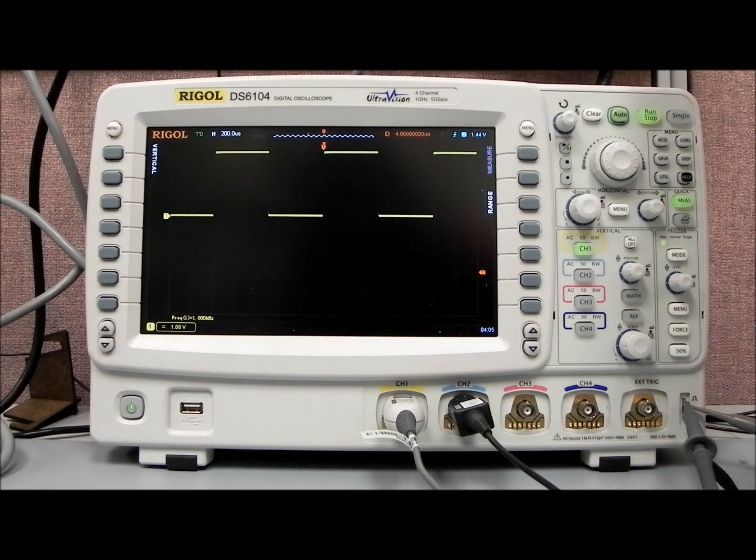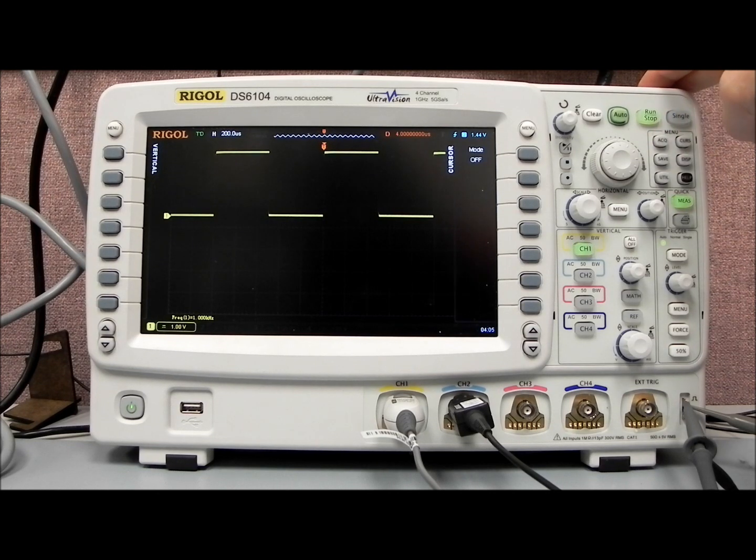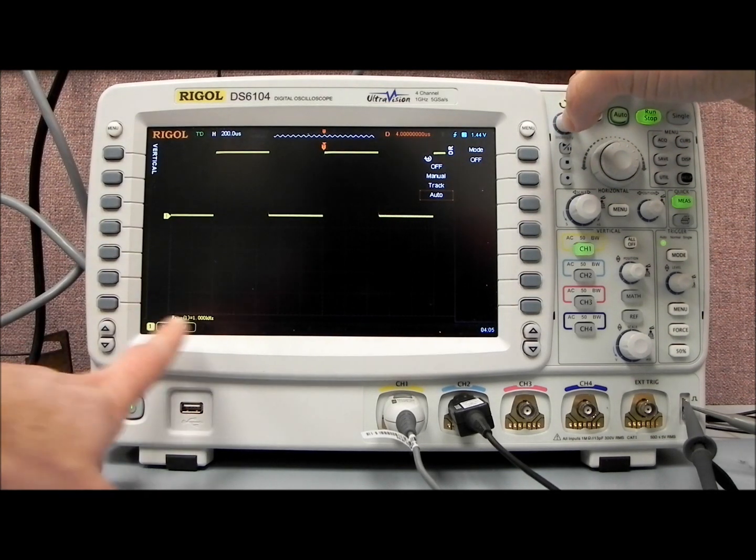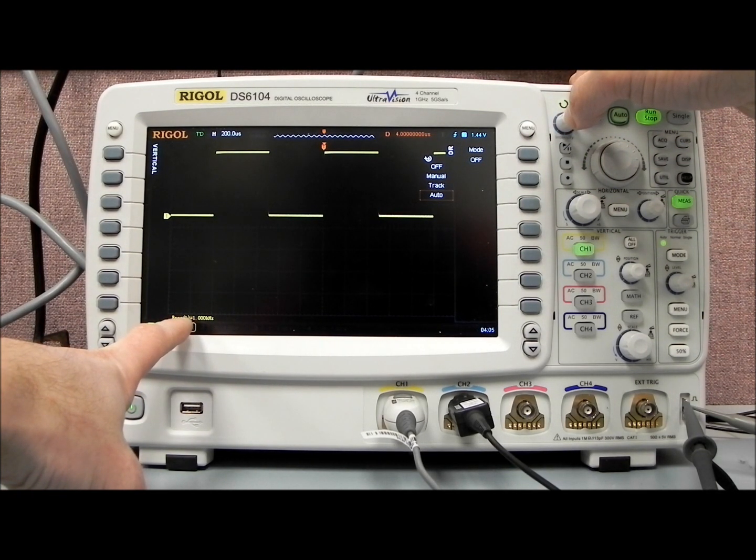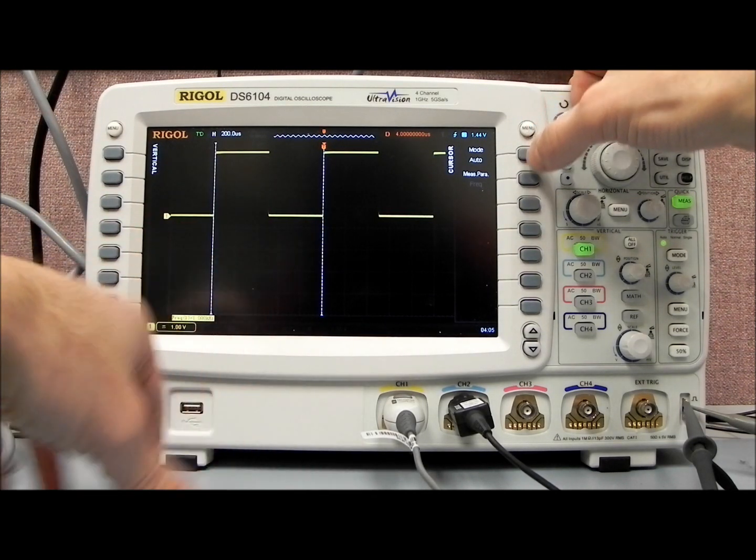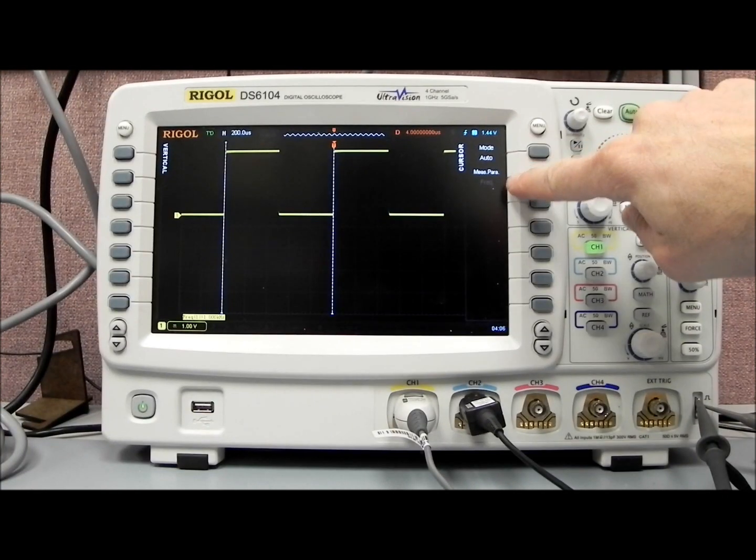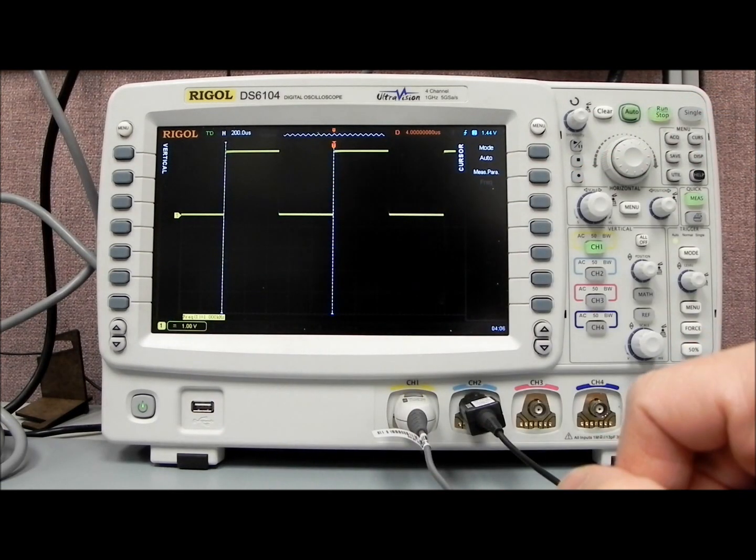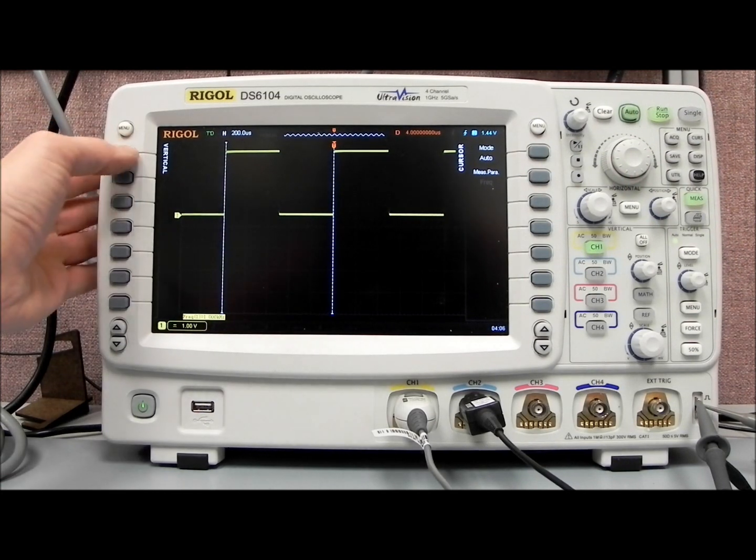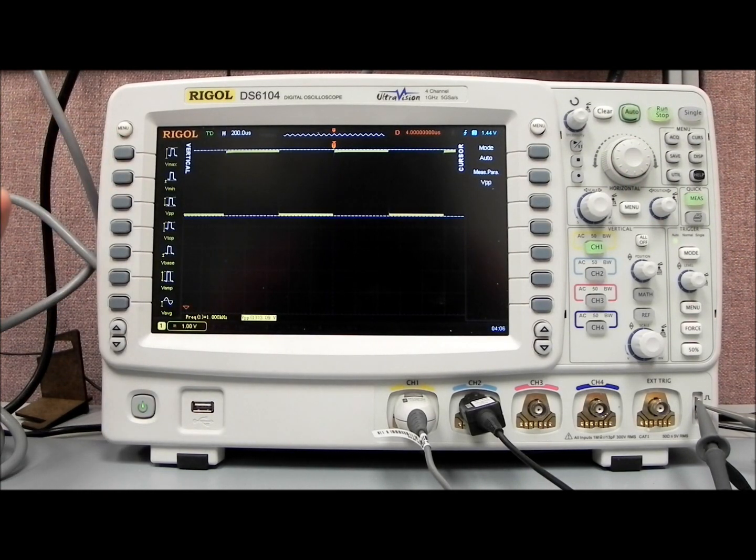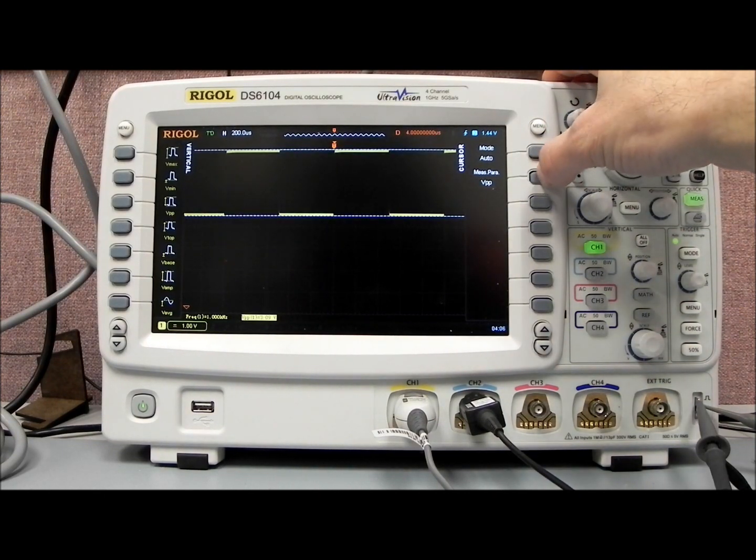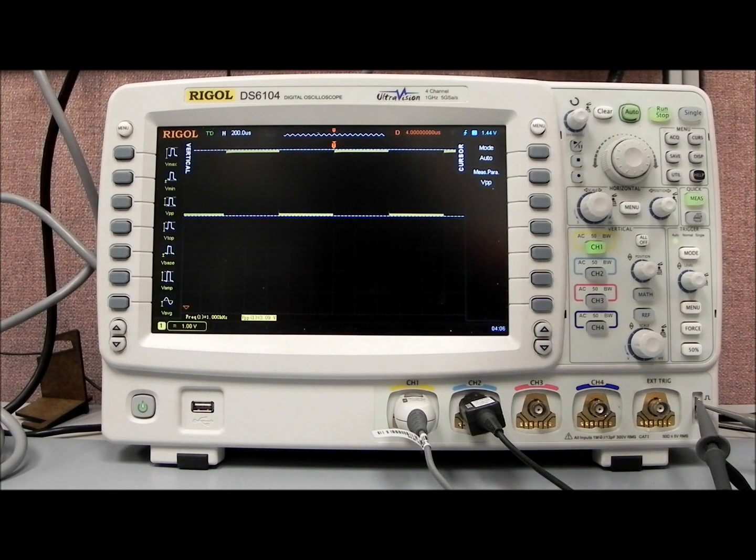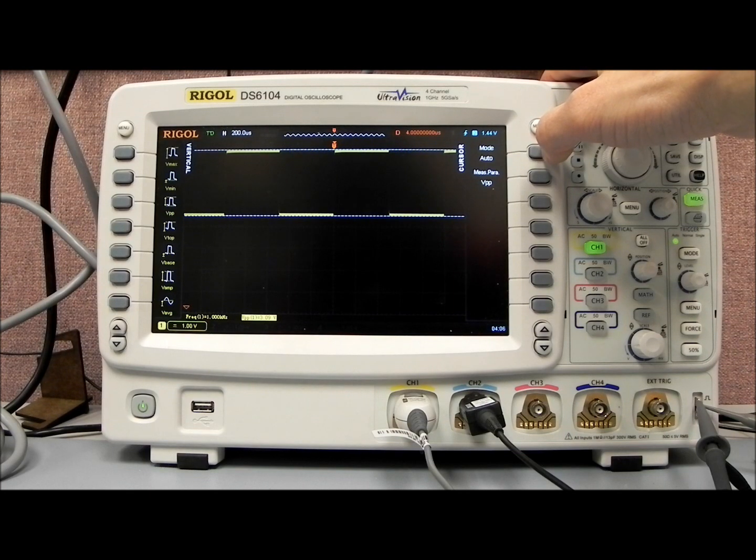We can also do some other things with measurements and cursors. If we come over here to the cursor area in the menu, pull cursors, we have a few different modes. We have manual, tracking, and auto. If we have a value pulled up, a measurement pulled up over here, and we hit auto, it will actually give us the area of frequency parameters. See how it says measurement parameters frequency? And now it's indicating where it's making those frequency measurements. And it's been highlighted, which is really nice. We can actually select if we had a number of parameters. Let's go to vertical and we'll do VPP. And so now we can select between the different values that we have available, and the cursors will then indicate where we're making those measurements.